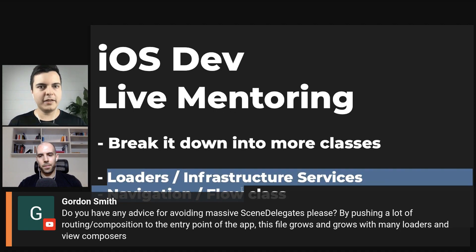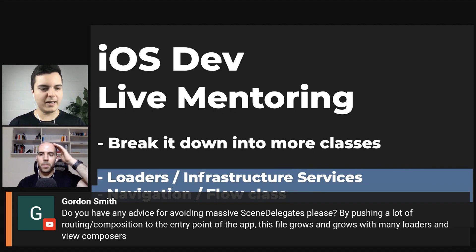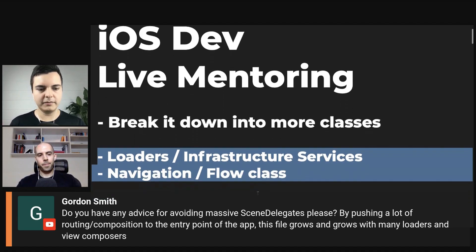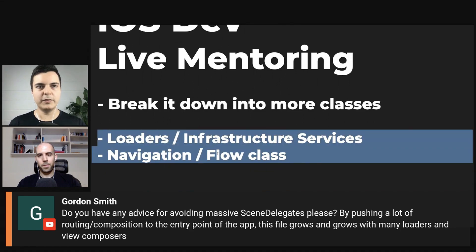But if those types depend on the composition root types — like some kind of containers or things like that — they should stay in the main module. But if you need to break it down, then you shouldn't be instantiating objects inside of them, and you can move them into separate modules.